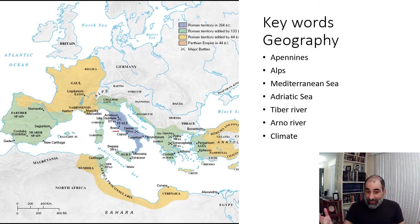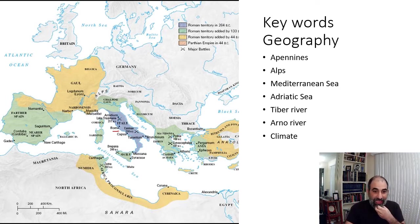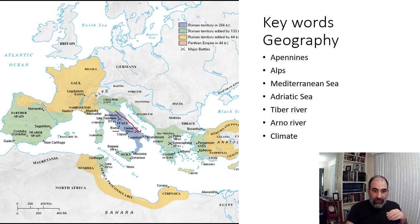There are two very important seas: the Mediterranean Sea and the Adriatic Sea. You can see them both on this map. There are several other seas as well, but as long as you know those two, you're good.